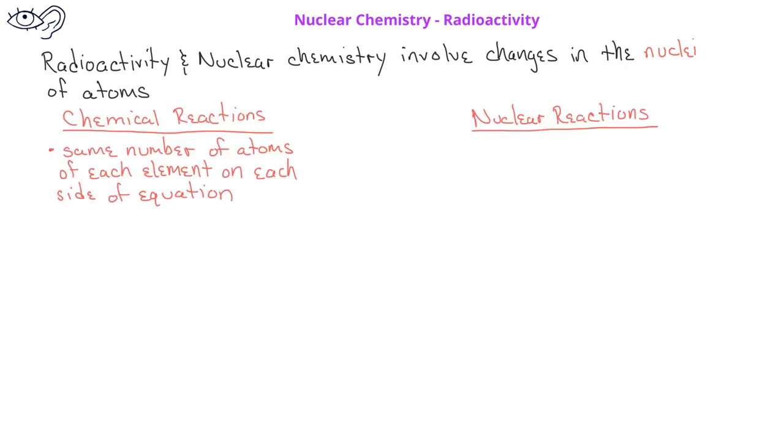Radioactivity and nuclear chemistry involve changes in the nuclei of atoms. While in chemical reactions, elements remain the same on each side of the equation, often nuclear reactions involve an atom changing from one element into another kind of element.